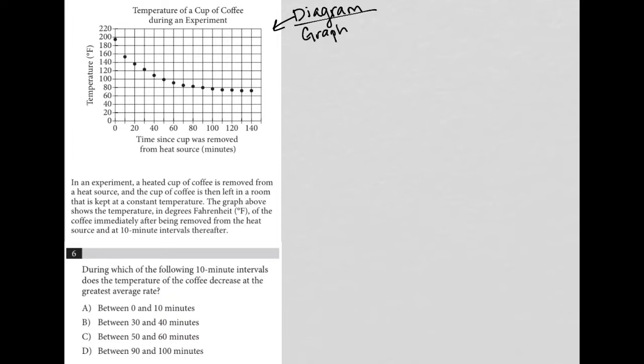So this graph, I like to look at the x-axis, which says time since cup was removed from heat source. The y-axis, which says temperature in degrees Fahrenheit. And then what are we talking about? So the heading of this or the title of this graph, which is temperature of a cup of coffee during an experiment.